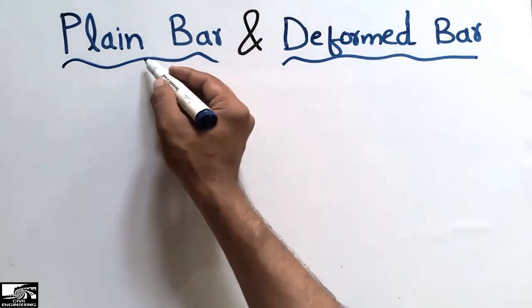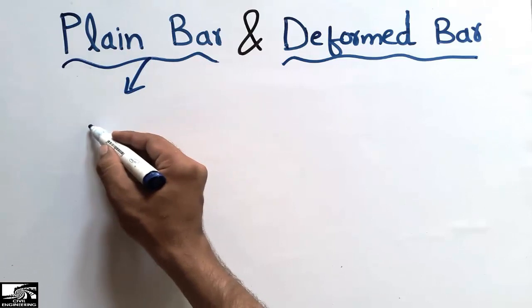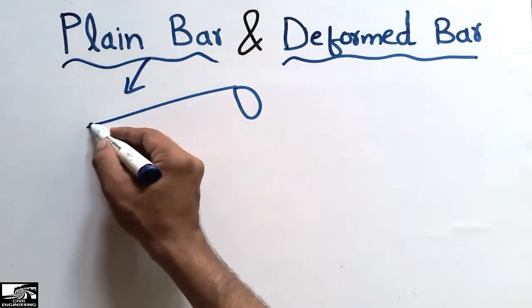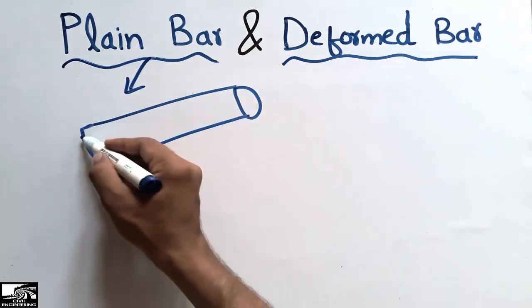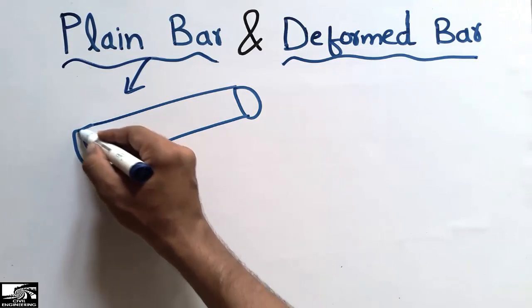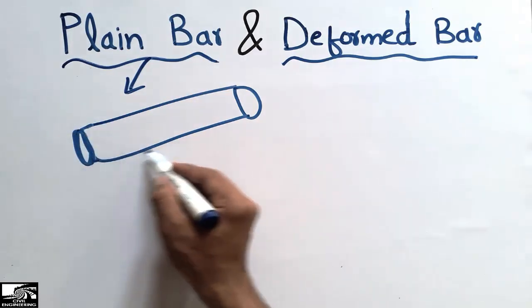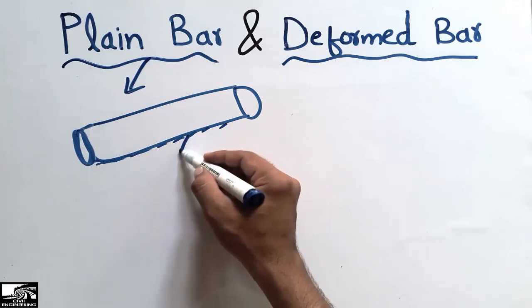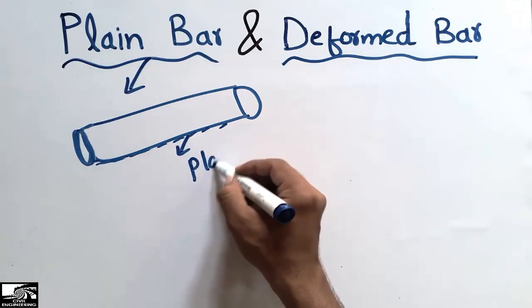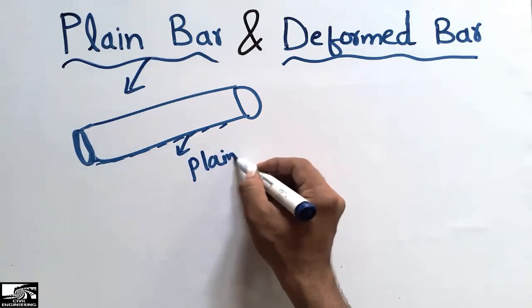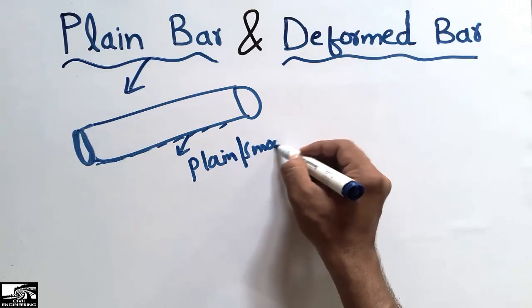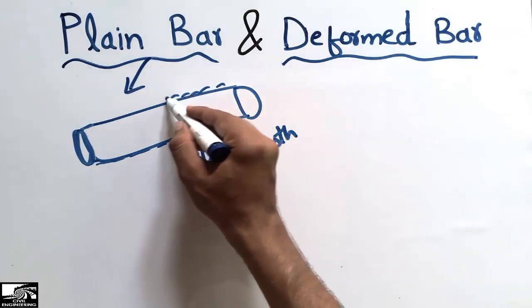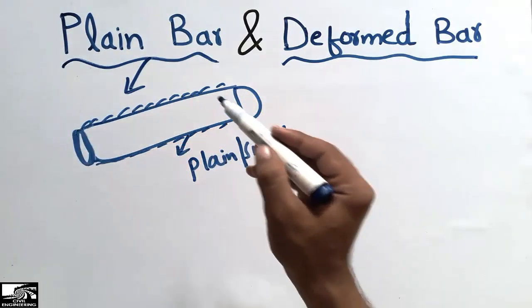The plain bar is a type of steel bar in which the outer side surfaces of the steel bar are smooth. These surfaces are mostly smooth and plane, which is why this type of bar is known as a plain steel bar.